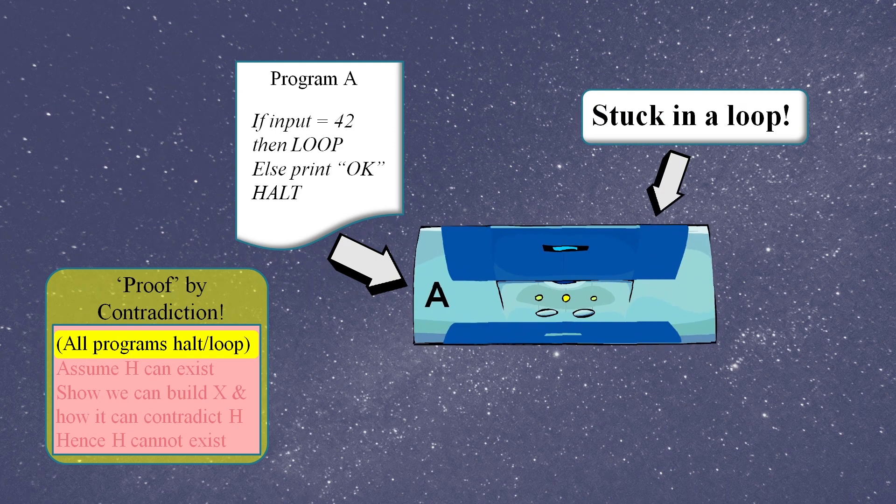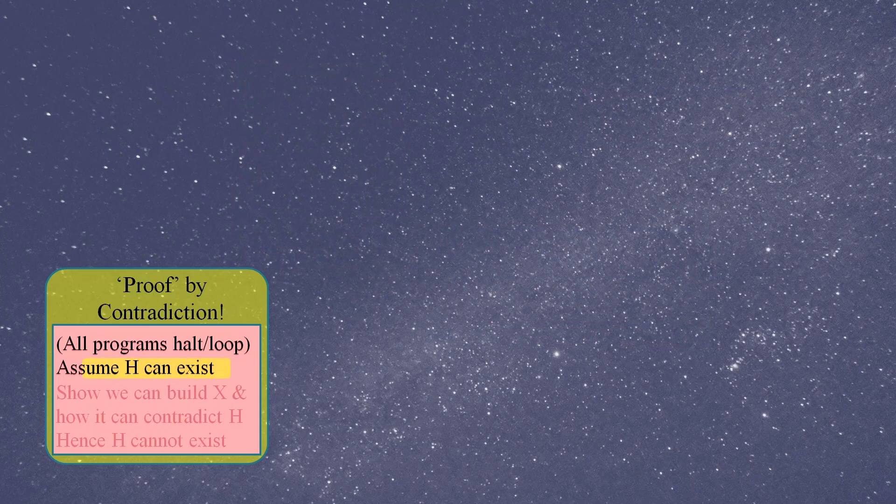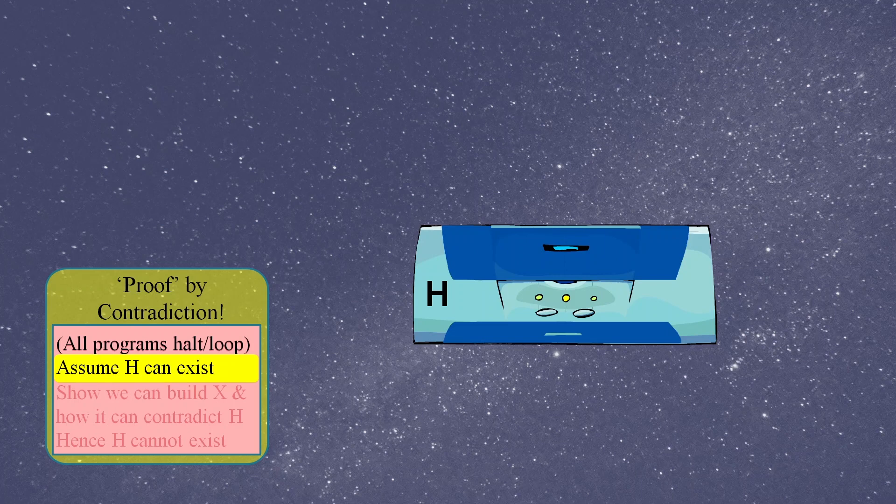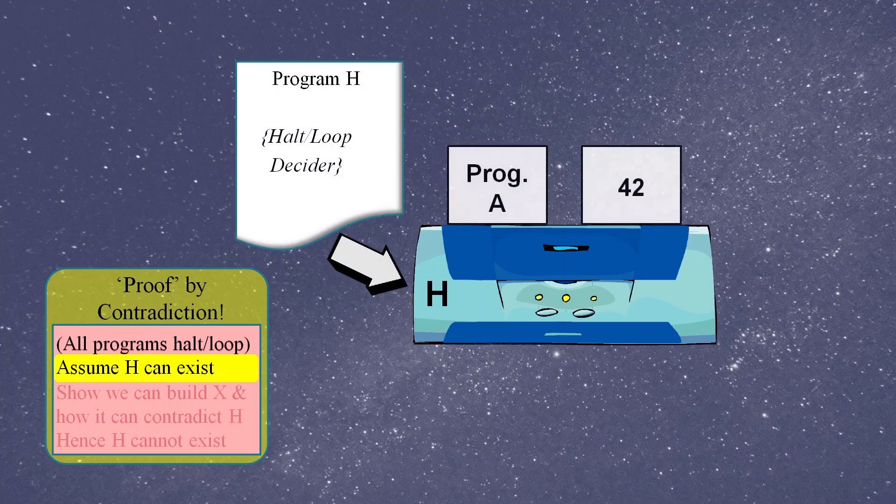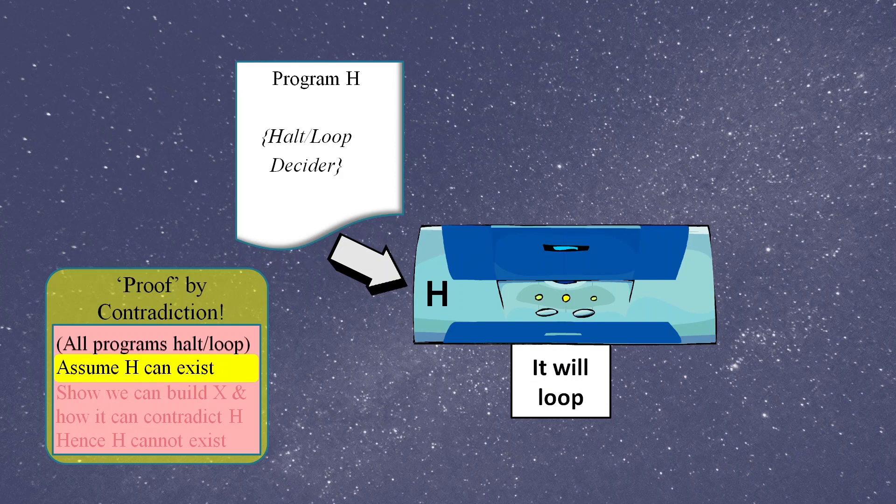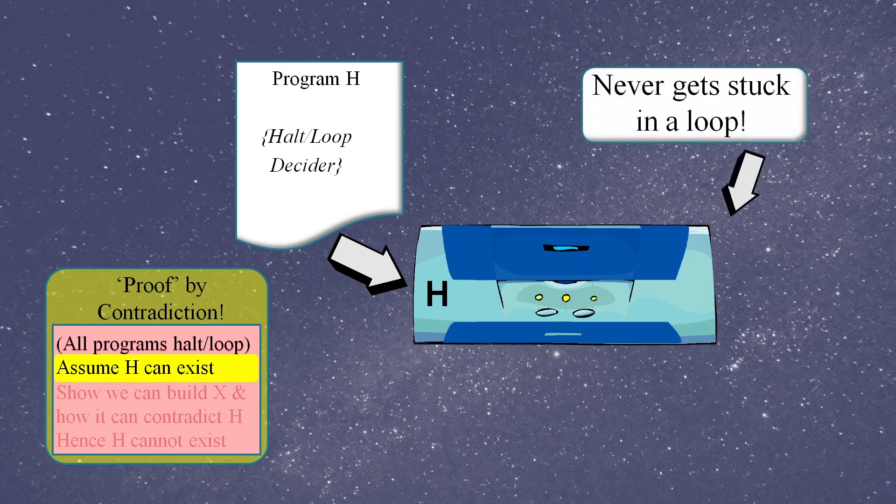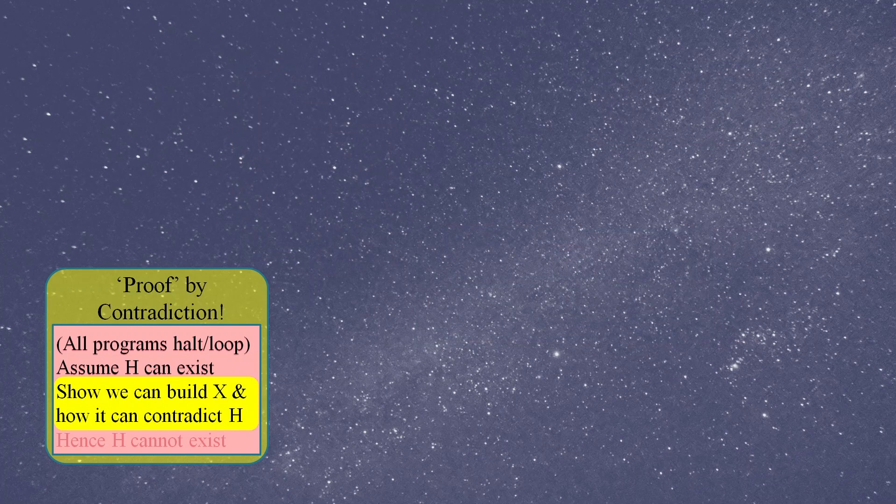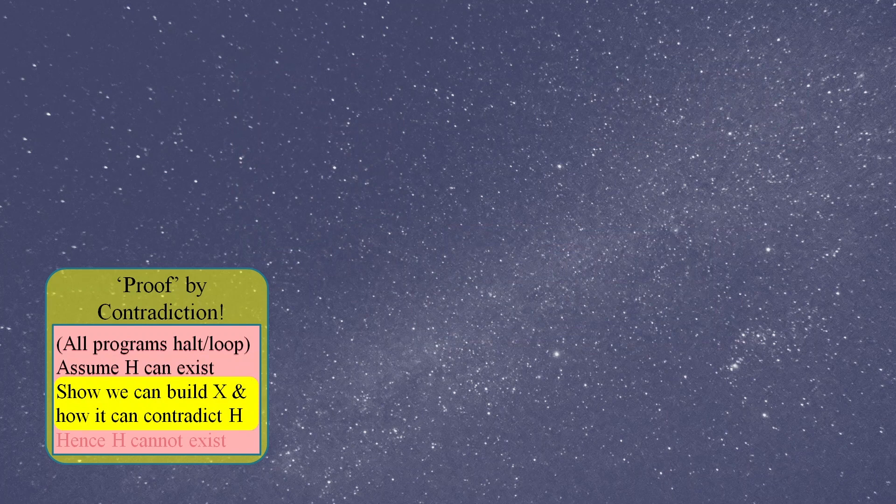If we've got a machine that runs program A which loops if its input is 42 but which halts for all other inputs, then say we input number seven it will print okay and stop. But if we input 42 it gets stuck in a loop and it looks like we're going to have to switch it off and on again. In the next stage of the proof we assume that a halt loop detector program can exist and we'll call this program Program H.